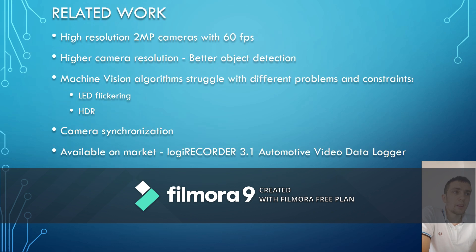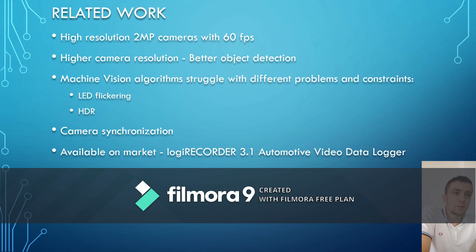There is not too much academic work related to this topic, but there are a lot of papers related to specific problems and challenges that must be solved by this kind of device. In order to improve ADAS capabilities and to make possible the transition to autonomous vehicles, new high-resolution 2-megapixel cameras with 60 frames per second must be used. Higher camera resolution is required in order to meet two important requirements: increased field of view and higher angular resolution.